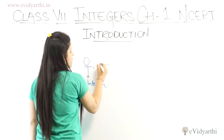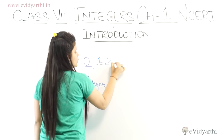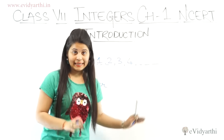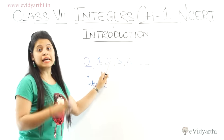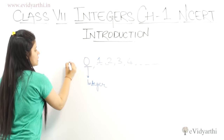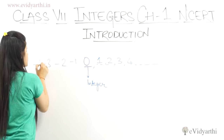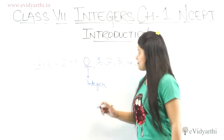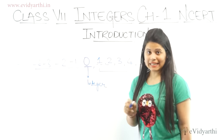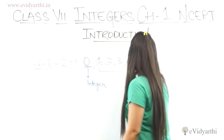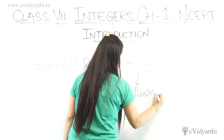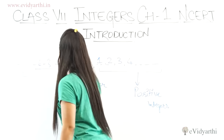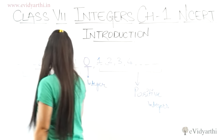Now, what are all numbers? 1, 2, 3, 4 and so on — these positive integers are integers. These are negative numbers, like minus 1, minus 2, minus 3, minus 4 and so on. These are integers. They are called negative integers.